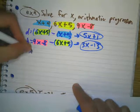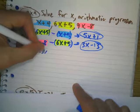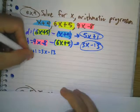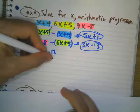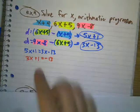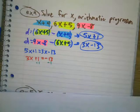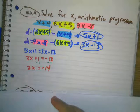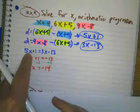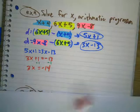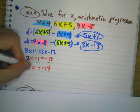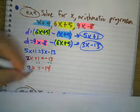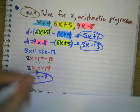We've got 5x plus 1 equals 3x minus 13. I can subtract 3x on both sides — wait, 5x minus 3x gives me 2x. So 2x plus 1 equals negative 13. Subtract 1 on both sides: 2x equals negative 14. Divide both sides by 2, I get x equals negative 7. Let's see if I did that right — let's plug in negative 7 into my sequence.